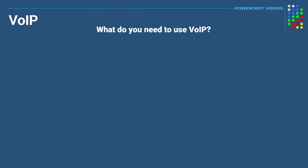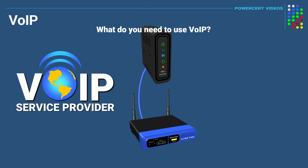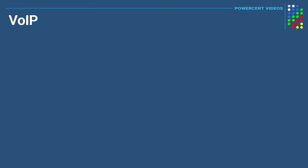So what do you need to use VoIP? You need a VoIP service provider, an internet connection, a router or switch, and a VoIP phone. You would plug the phone into your router or switch using a network cable, sign up with a VoIP provider, and then you can make phone calls over an internet connection.